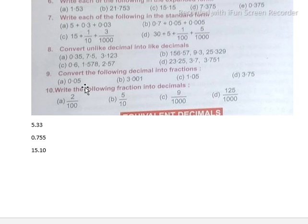In place of the 100th place value, we have to write 0, because there is no 100th place here. And 3 is in the 1000th place, so write 3. That's 15.103, right? And part d: 30 plus 5.